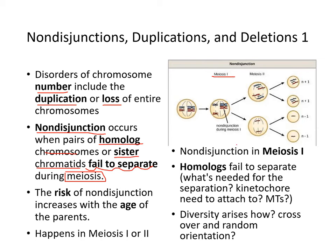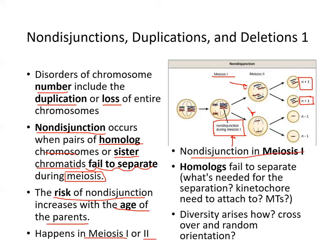In meiosis I non-disjunction, the homologs fail to separate, resulting in one daughter cell with N+1 chromosomes and another missing one. The risk of non-disjunction increases with the age of the mother. Non-disjunction can happen in either meiosis I or meiosis II, and both lead to different results.